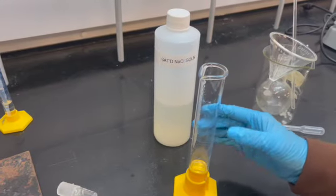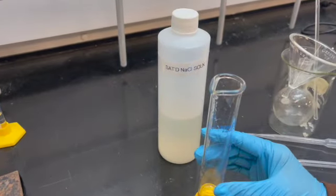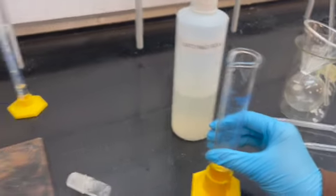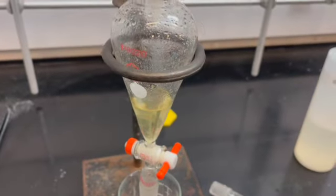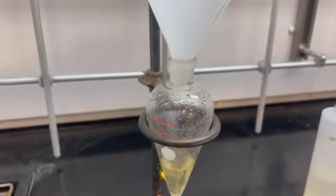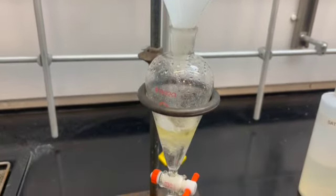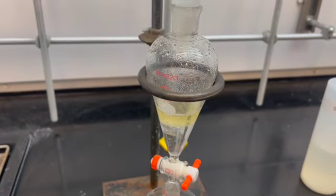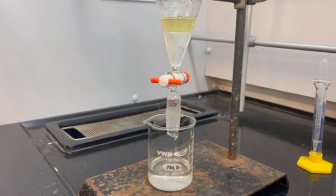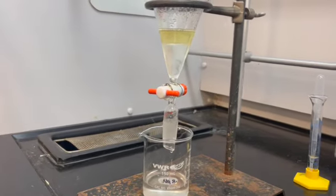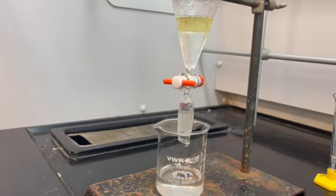We are going to add 15 milliliters of saturated NaCl solution into our separatory funnel, which then we will mix, open, mix, open, mix, open. Now we are going to start separating our organic layer from the saturated NaCl solution.